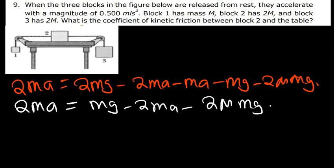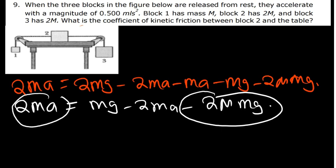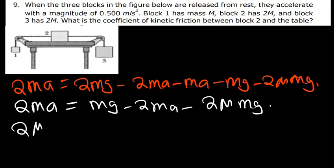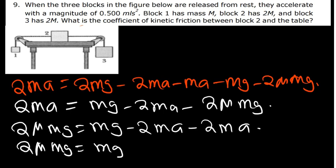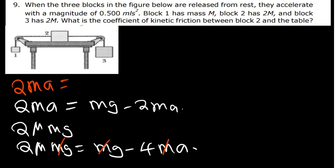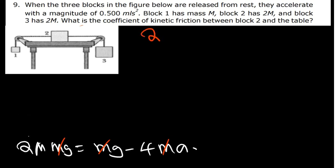We now plug in the values: g equals 9.8 and A equals 0.5 meters per second squared. So mu equals (9.8 minus 4 times 0.5) divided by (2 times 9.8) equals (9.8 minus 2) divided by 19.6 equals 7.8 divided by 19.6, which gives mu k approximately 0.40.